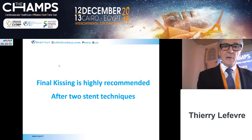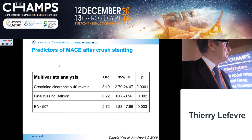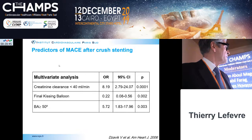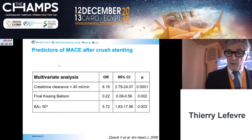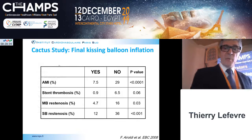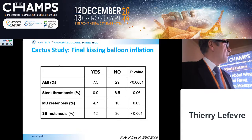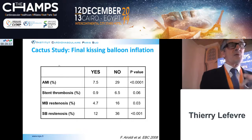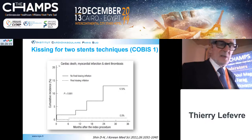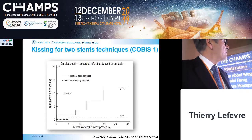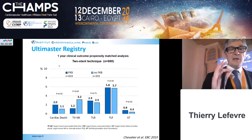There is extensive data supporting this. From the CRUSH study by Zavik, MACE risk is multiplied by five if kissing balloon inflation is not performed after a CRUSH technique. From Eroldui with mini-CRUSH, stent thrombosis is multiplied by six and restenosis multiplied by three for both the main branch and the side branch. From the Korean registry, the MACE rate is 13% compared to 0.5% without final kissing. Final kissing with double stent technique is mandatory.